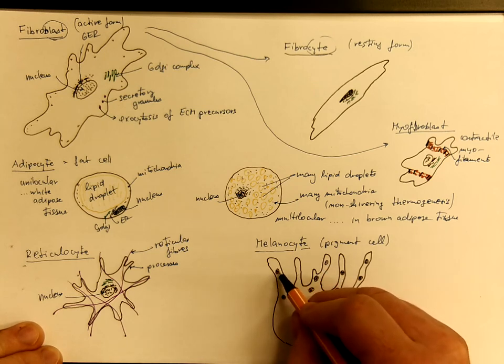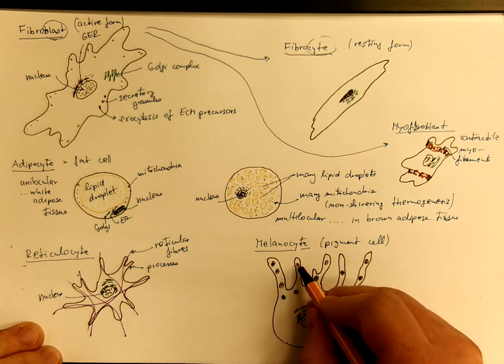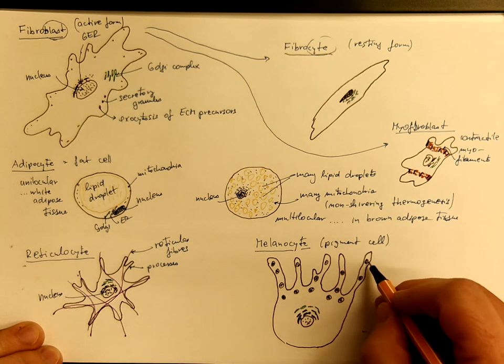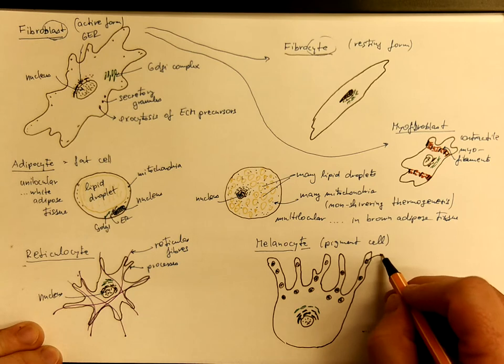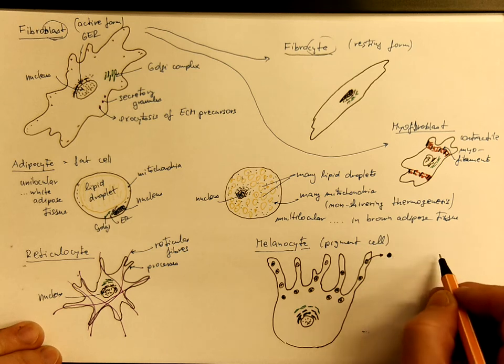The melanosomes are entering the cell processes and then they undergo exocytosis. So these pigment granules are released into the extracellular space, from which they could be swallowed by other surrounding cells.